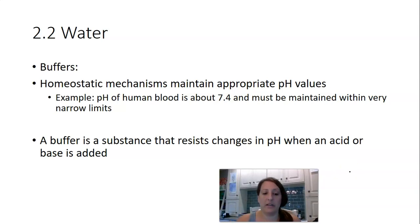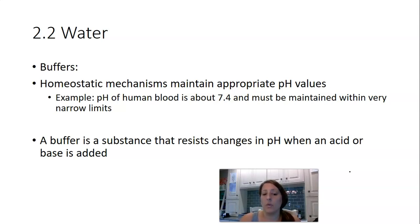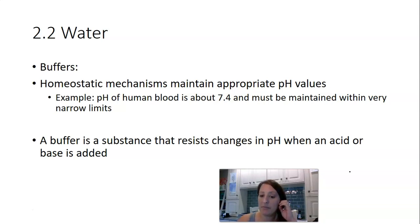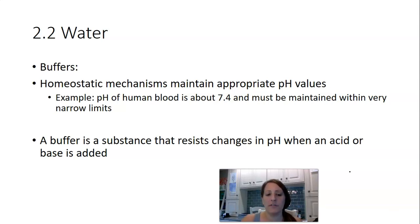Chemical reactions are taking place inside your body all the time inside your cells, and that might throw pH off. A buffer is a substance that helps to maintain homeostatic pH — maintaining appropriate pH values so that cells and tissues are not damaged. For example, human blood has a pH of about 7.4, and it has to maintain that pH or blood cells will start to die. A buffer is going to be a substance that resists changes in pH.